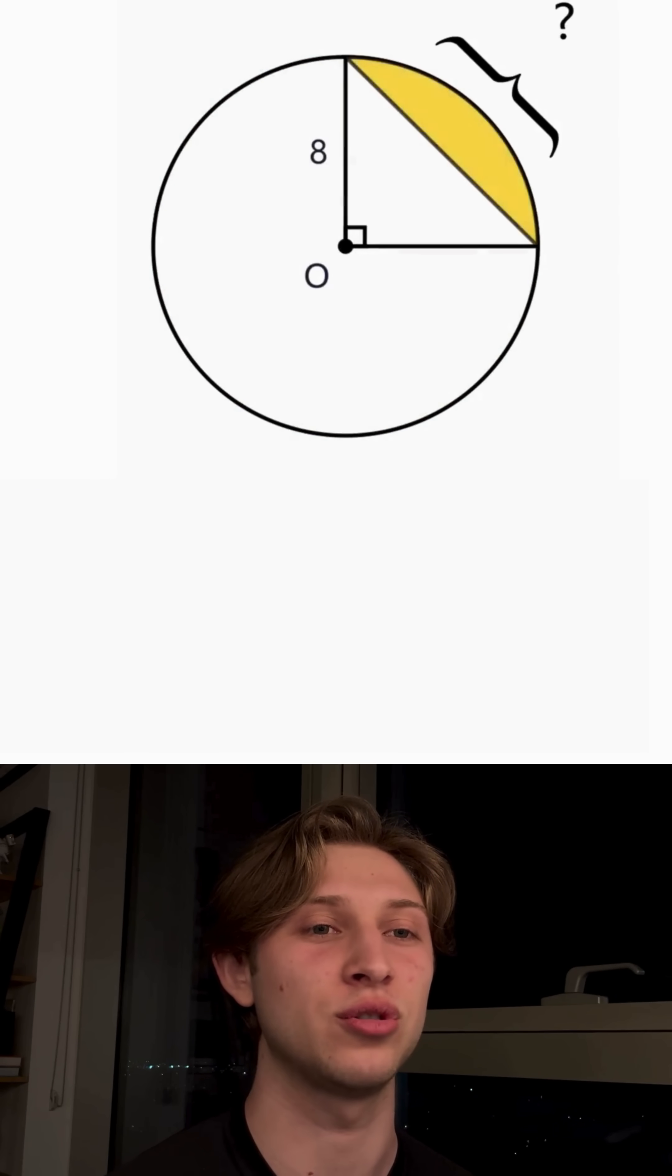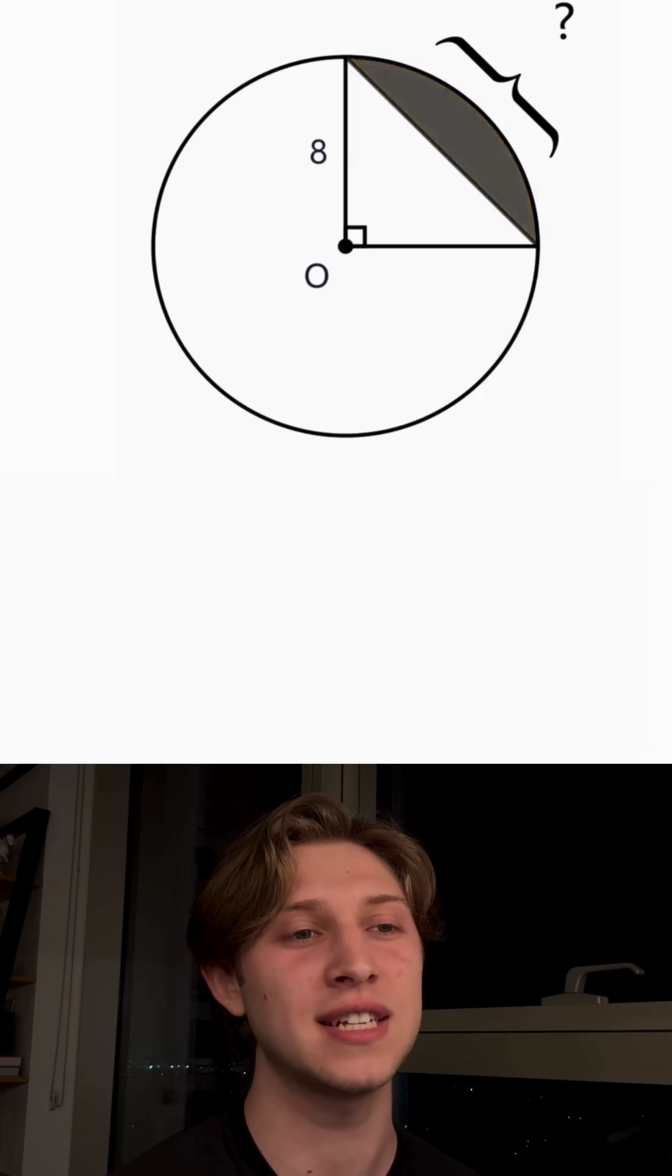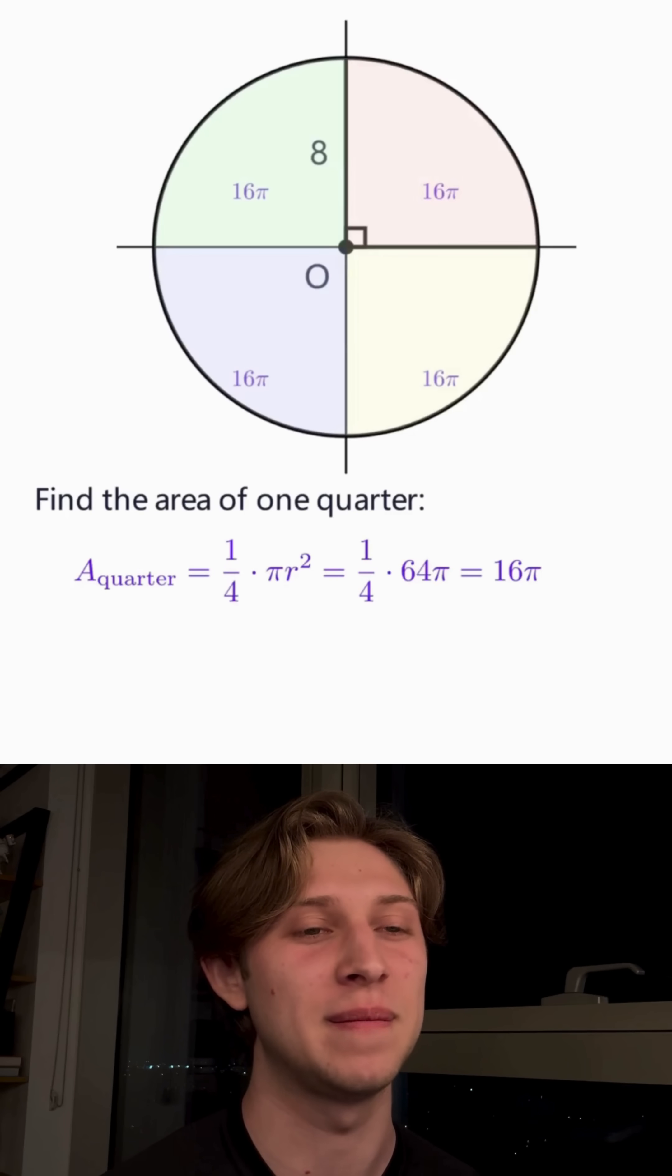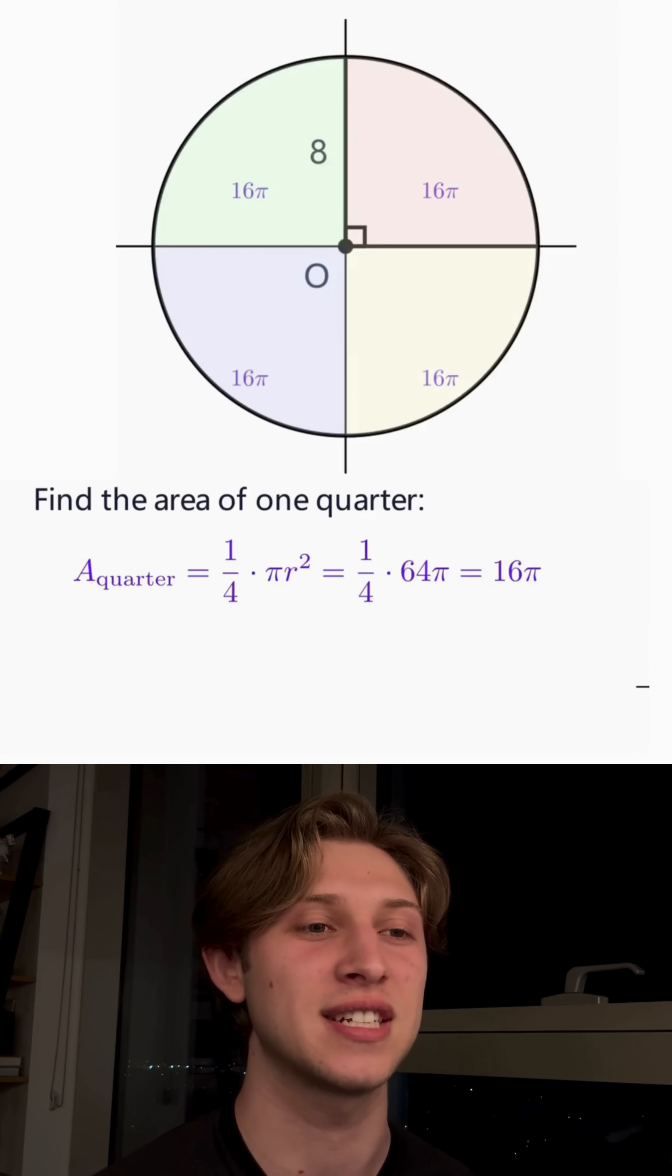But how do we find that little shaded part? Well, imagine slicing the circle into four equal parts like a pizza. If the total area of the circle is 64 pi, then each of those slices would have an area of 16 pi.